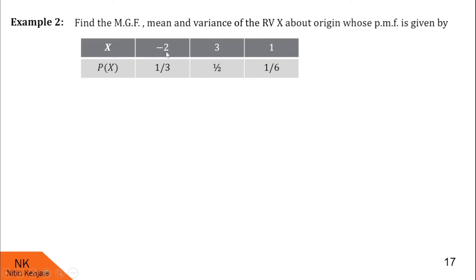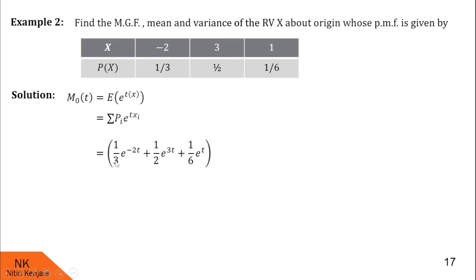Here x is the random variable taking values minus 2, 3, and 1, with probabilities respectively 1/3, 1/2, and 1/6. The moment generating function of x about origin is M(0,t) equal to E(e^(tx)), which equals summation pi times e^(t·xi). Substituting values: when x1 is minus 2 with probability 1/3, first term is (1/3)e^(−2t); when x2 is 3 with probability 1/2, second term is (1/2)e^(3t); when x is 1 with probability 1/6, third term is (1/6)e^t. So M(0,t) = (1/3)e^(−2t) + (1/2)e^(3t) + (1/6)e^t.